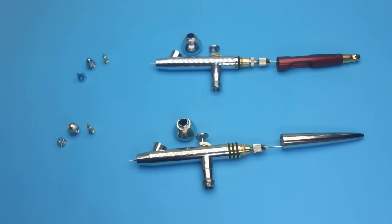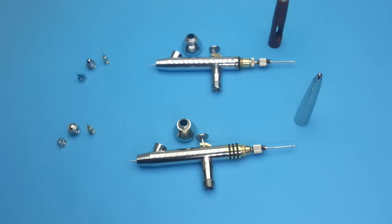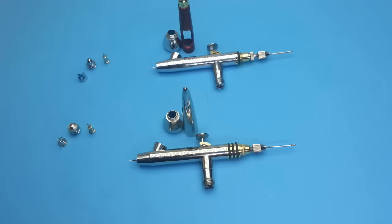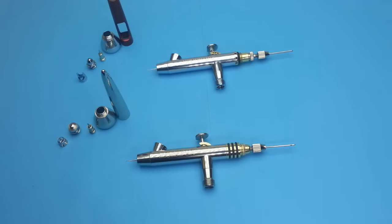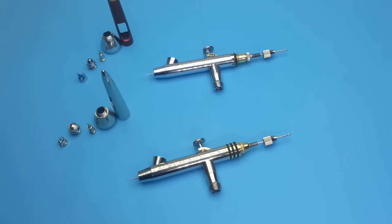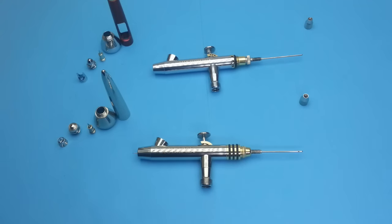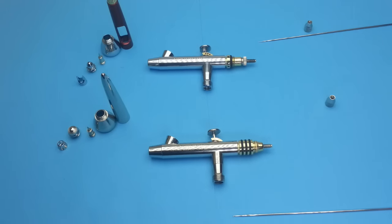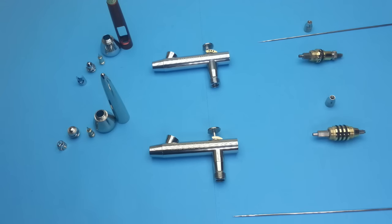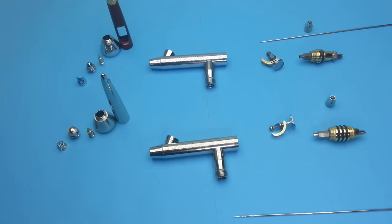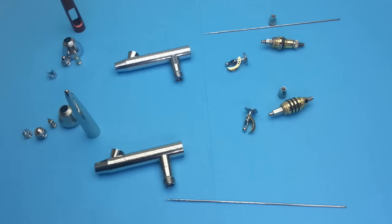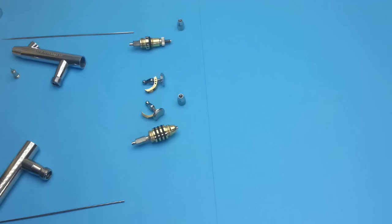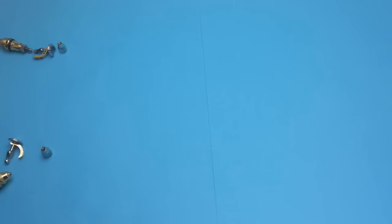At the back the Infinity has the quick fix end piece with dial that the Evolution doesn't have. They both can use the same needles as long as they use the same nozzles. The mechanism that holds the needles and the levers differ a bit between them. The bodies are mostly the same but they differ in the coating.